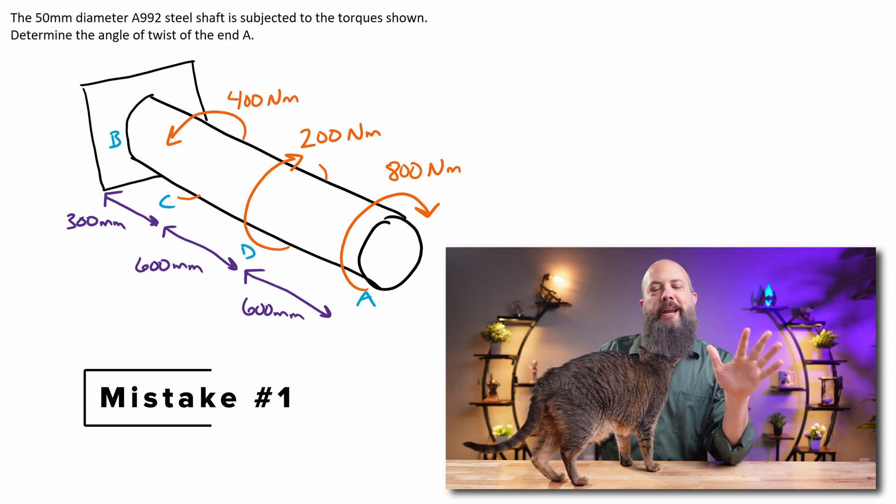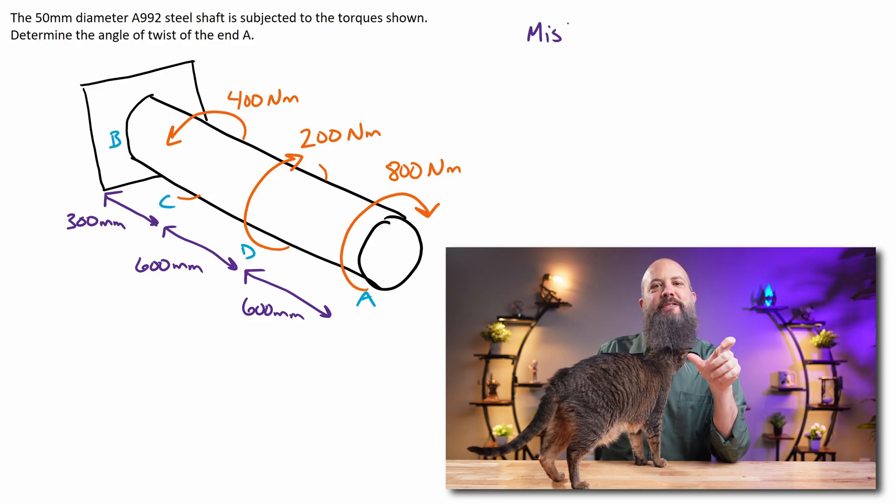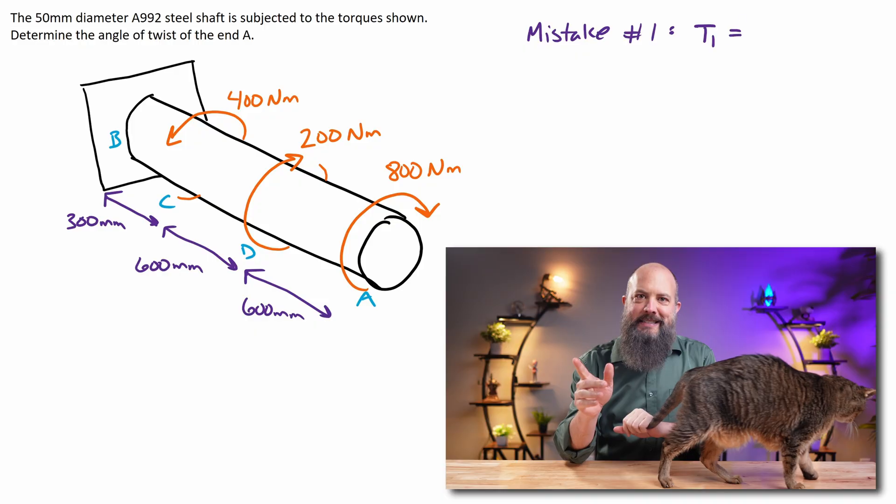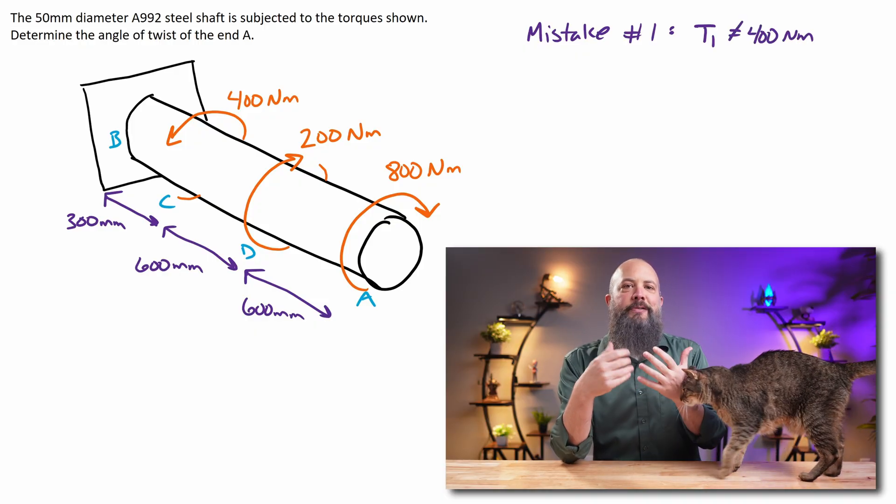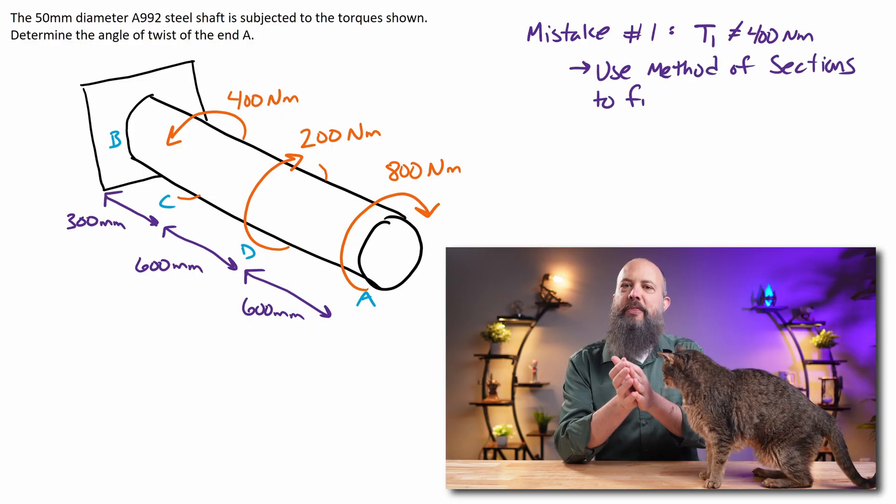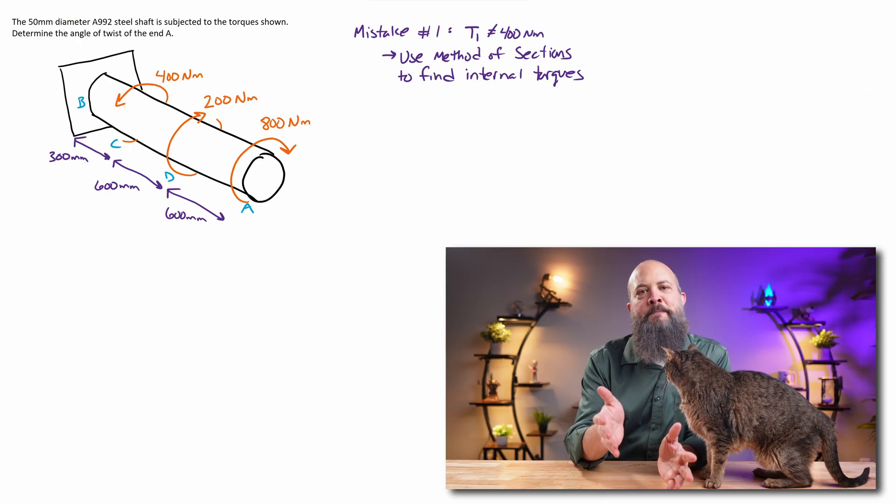Mistake number one: there will be three different sections of this bar with three different torque values, but the torques are not 400, 200, and 800. In order to find the internal torque in each of the three sections, you have to use method of sections to find these internal torques.